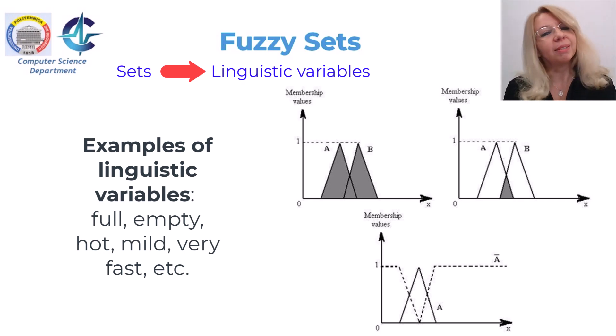Professor Zadeh suggested that set membership is the key to decision-making when faced with uncertainty. This notion of set membership is very important for object representation within a universe. Classical sets contain objects that satisfy precise properties of membership. Fuzzy sets contain objects that satisfy imprecise properties of membership.